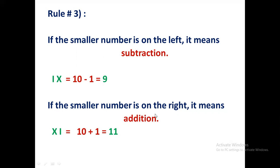But if the smaller number is on the right, look at this one. Now smaller number is on the right side and bigger number is on the left side. So that means addition, 10 plus 1, that is 11. So IX is 9, but XI is 11.